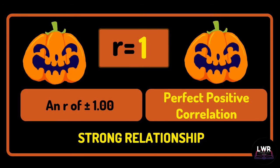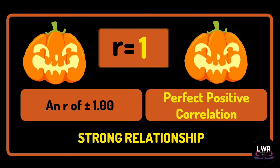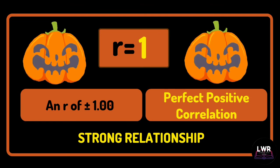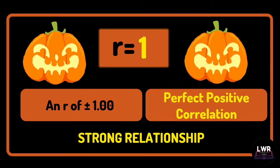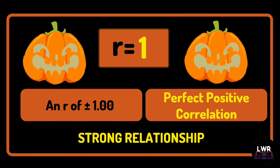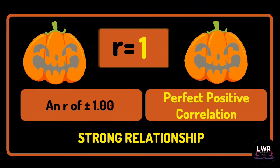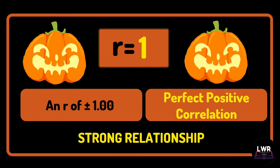So the answer to example number 1, which is r equals positive 1, is interpreted as a perfect positive correlation, which means that the relationship of x and y variables is strong.